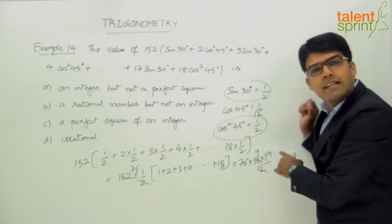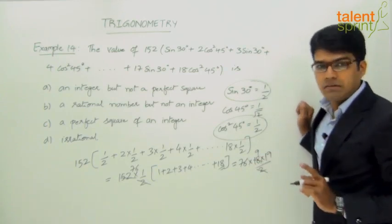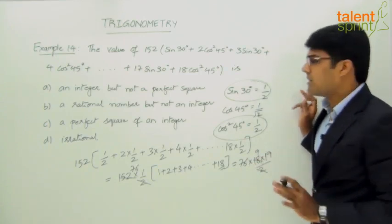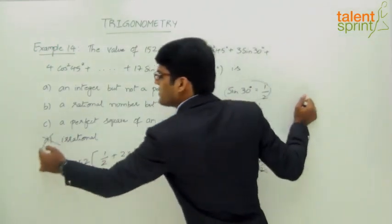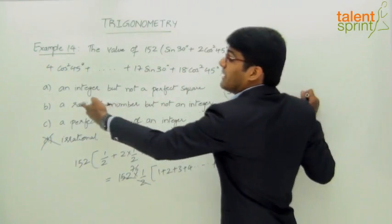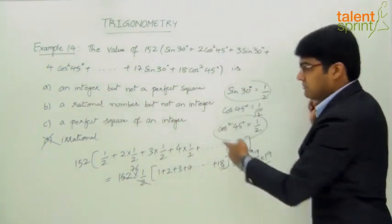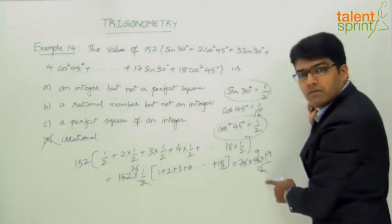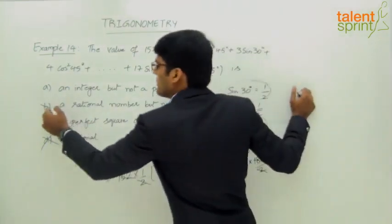Now clearly 76 into 9 into 19 is an integer. It is an integer, a rational number. So option D irrational is ruled out. And option B, a rational number but not an integer - no, it is an integer. The given value here will be an integer. So even option B is ruled out.